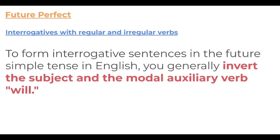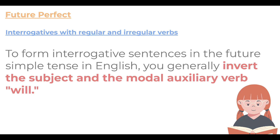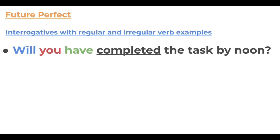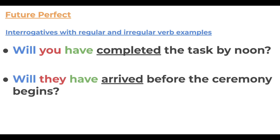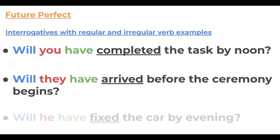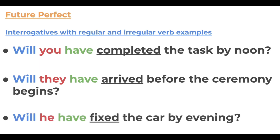For interrogatives, we invert the subject and the modal auxiliary verb 'will'. For example: 'Will you have completed the task by noon?' If you wanted to switch this back to an affirmative sentence, you simply swap the subject and 'will' back. More examples: 'Will they have arrived before the ceremony begins?' 'Will he have fixed the car by evening?' Fairly simple and straightforward for asking questions in the future perfect.